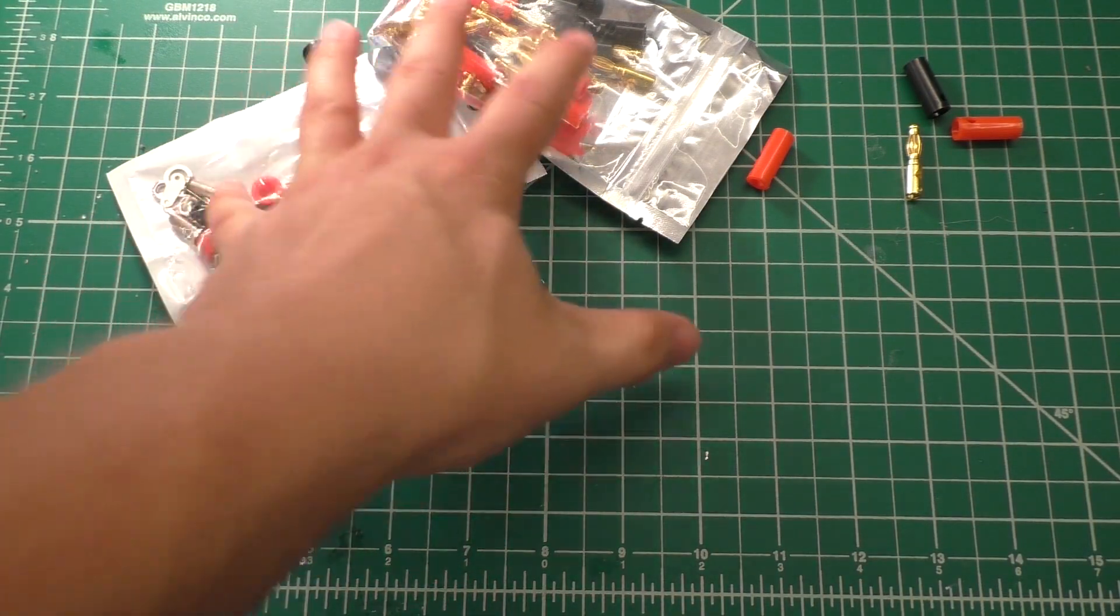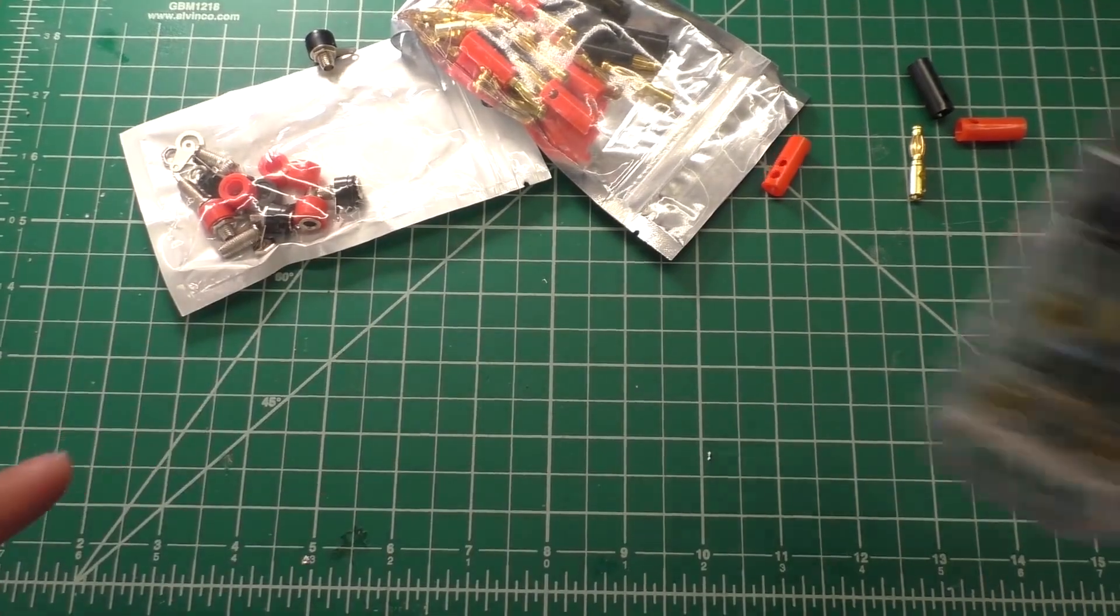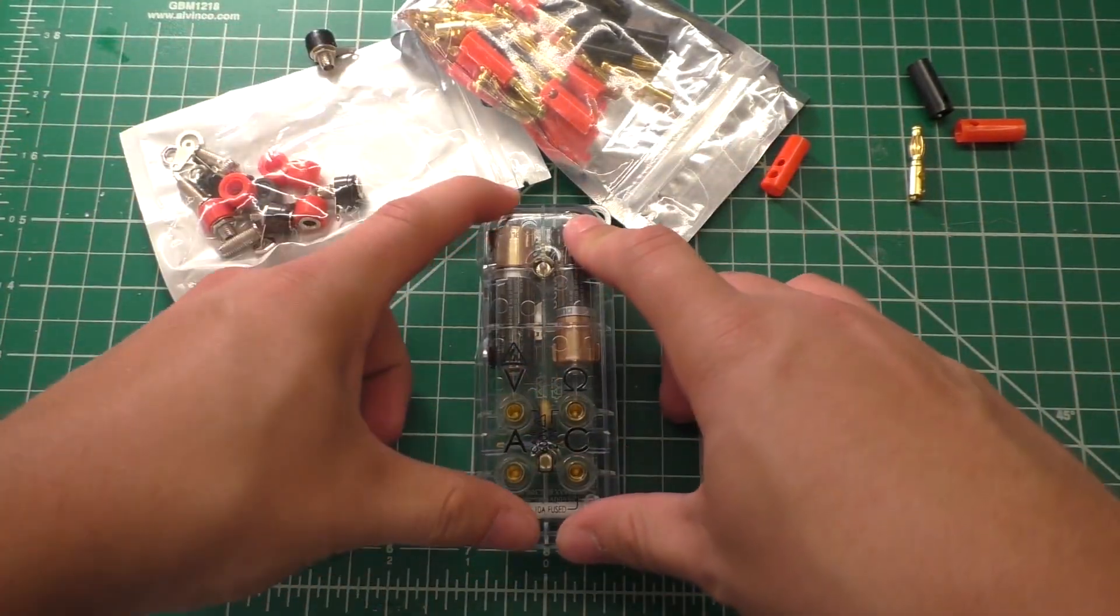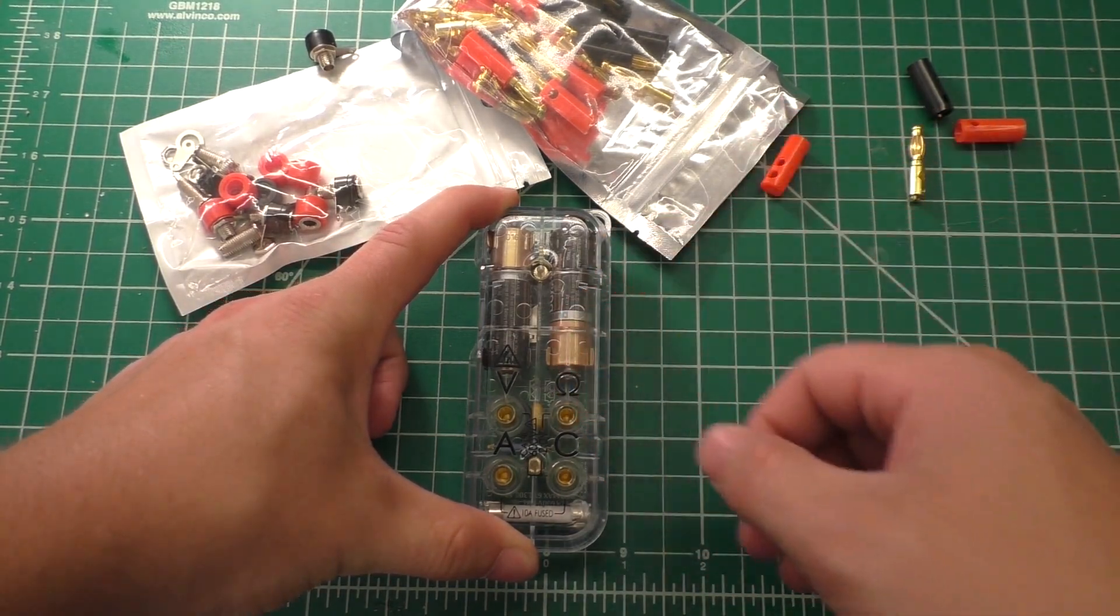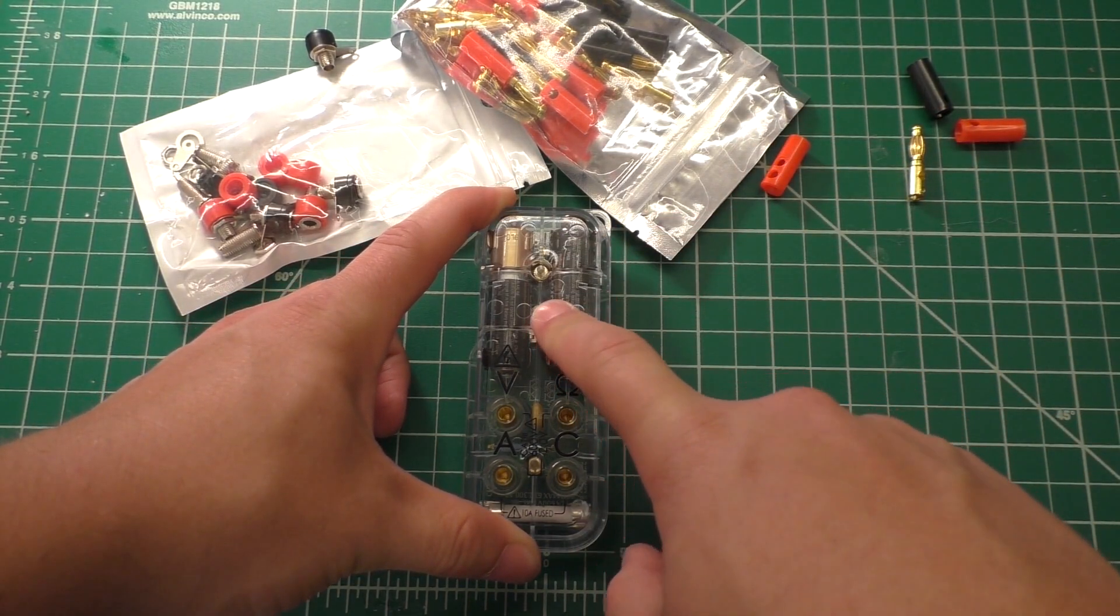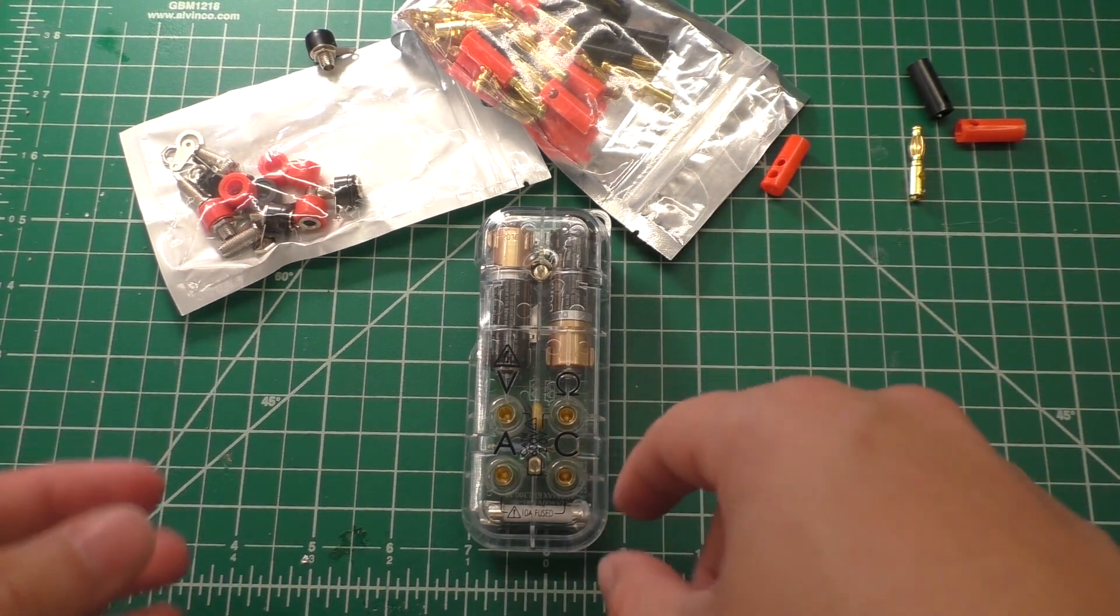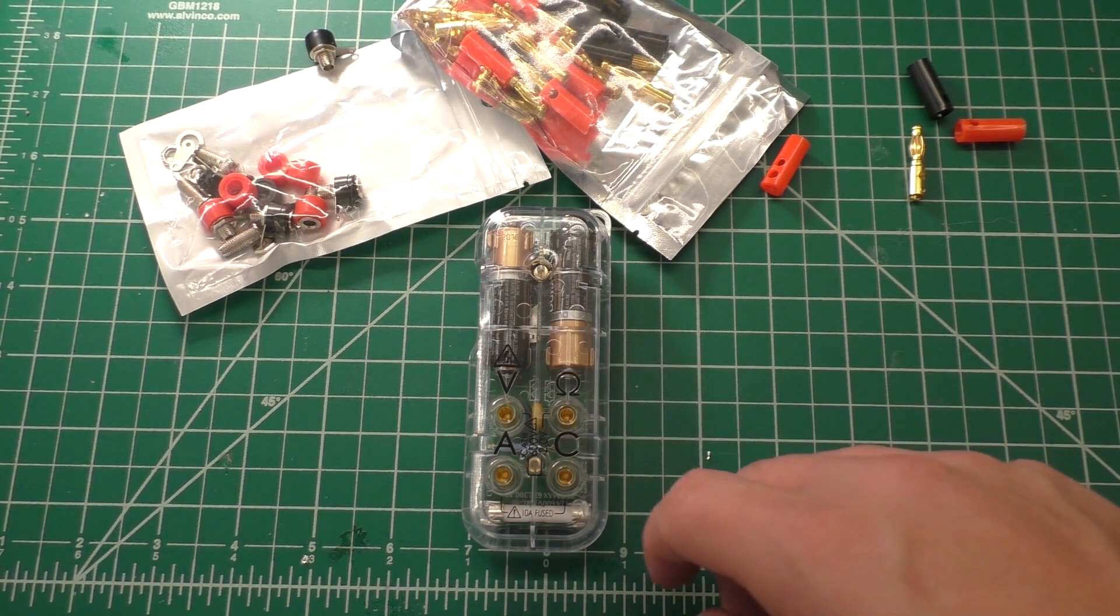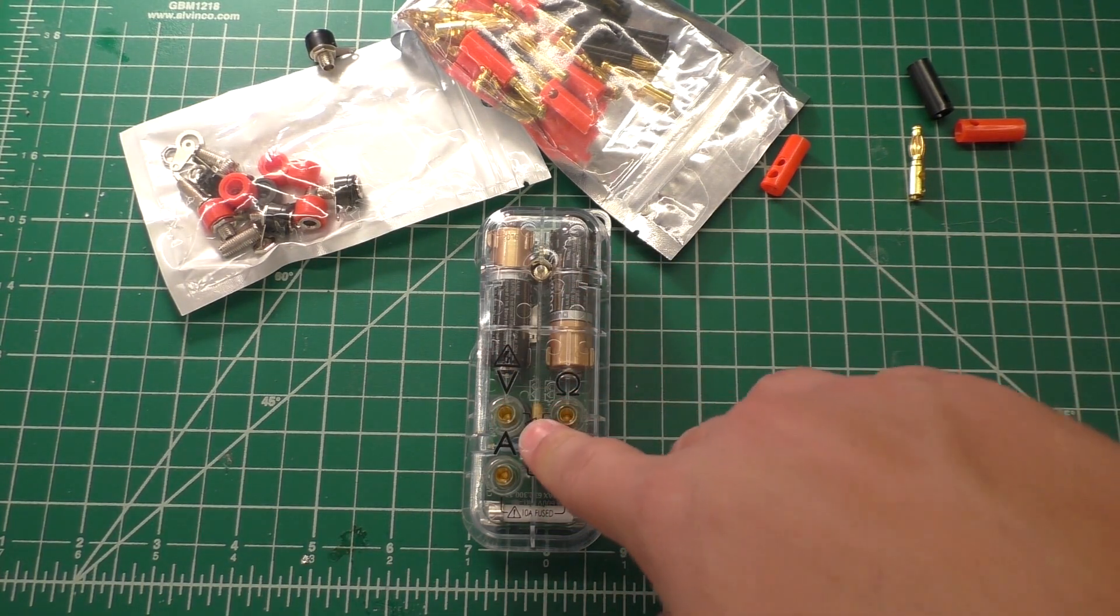So the plan with these parts is to build a little box for my multimeter here. This is the Mooshimeter, and it's more of a data logger than it is a multimeter, but it does send the live data of what's going on over Bluetooth to a smartphone or a tablet. And it's actually a pretty precise and accurate little meter.